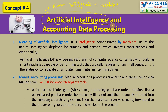How is Artificial Intelligence related to accounting data processing? The meaning of Artificial Intelligence is: it is intelligence demonstrated by machines, unlike the natural intelligence displayed by humans and animals, which involves consciousness and emotionality. So it is an intelligence demonstrated by the machines — human intelligence filled in the machines.